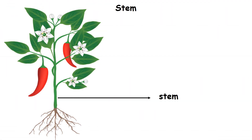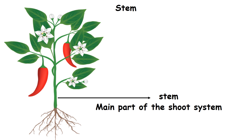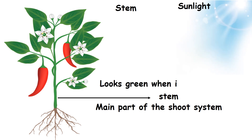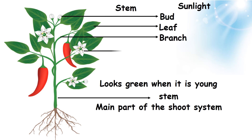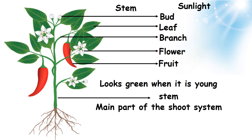Stem. The stem is the main part of the shoot system. It grows towards the sunlight. It looks green when it is young. Branches, leaves, buds, flowers and fruits grow from the stem.